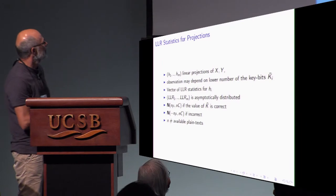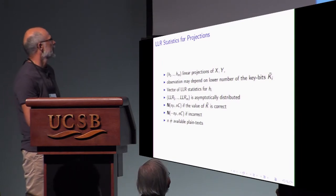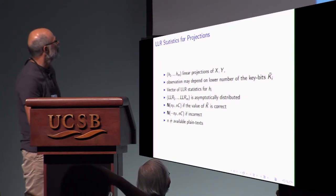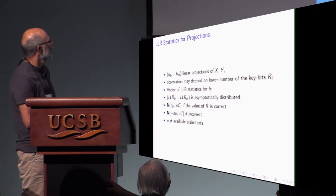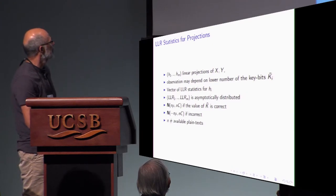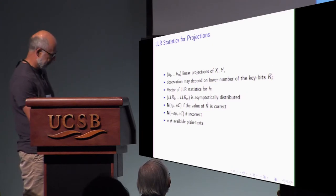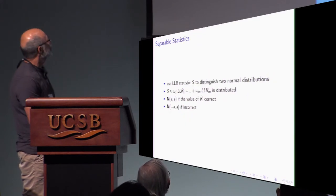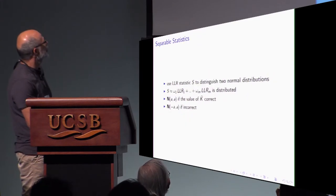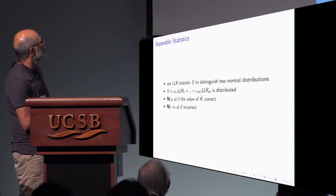And otherwise, if the value of this key bits is not correct, it's distributed in this way. Where n is the number of variable plain text. It's supposed to be big.